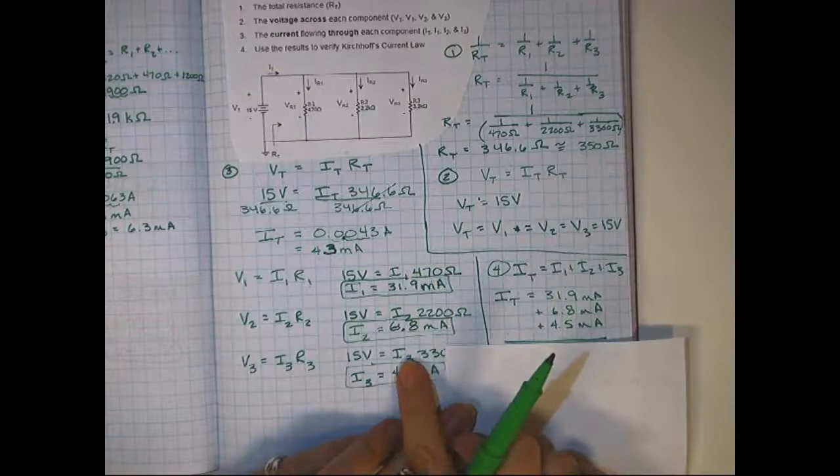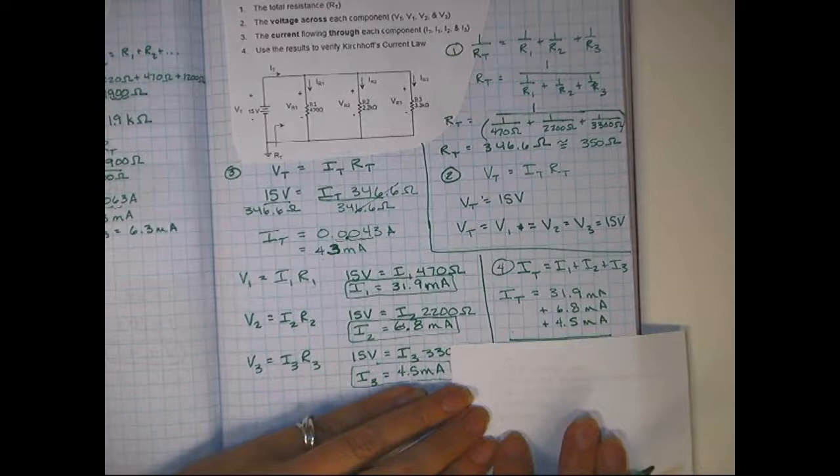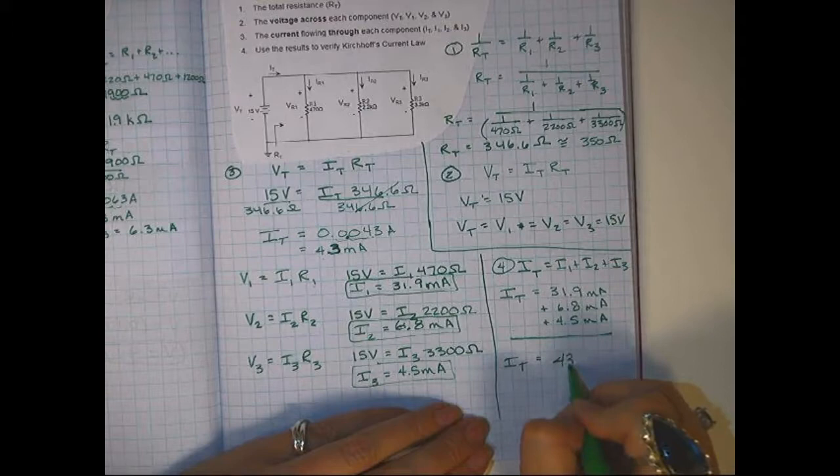So I did that here. I took the three currents from right here, and I added them up. Plug those in your calculator, pause the video, make sure you get the answer. And did you get 43 Ohms? That's what you should have got.